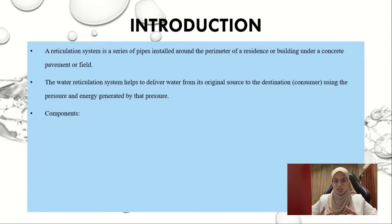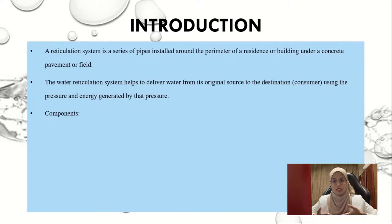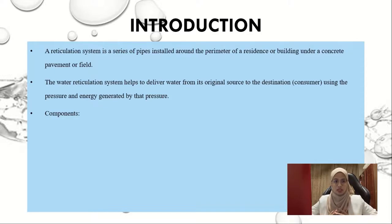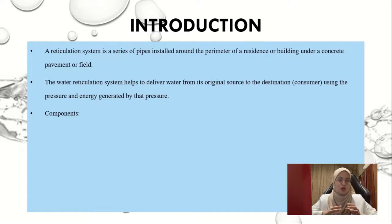As for the introduction, a water reticulation system is a series of pipes installed around the perimeter of a residence or building under a concrete pavement or field. The main function of the water reticulation system is to help deliver water from its original source — the water tank — to its destination, which is the consumers, with the aid of pressure and energy generated by that pressure.